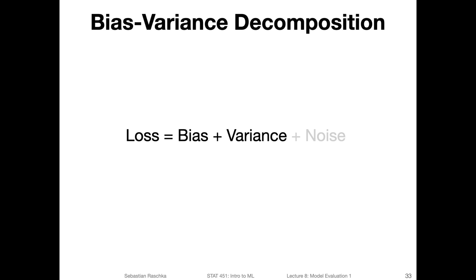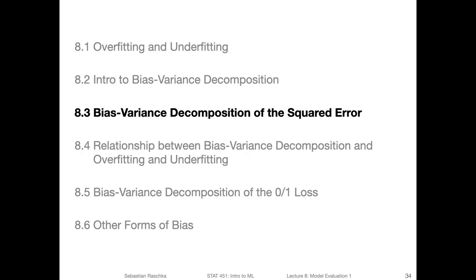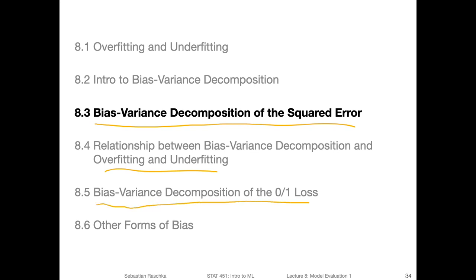So we are now doing the bias-variance decomposition of the squared error loss, ignoring the noise term for simplicity. That is what we are going to do in the next video. Then we will look at how that relates to overfitting and underfitting, and lastly we will also do the bias-variance decomposition of the zero-one loss.